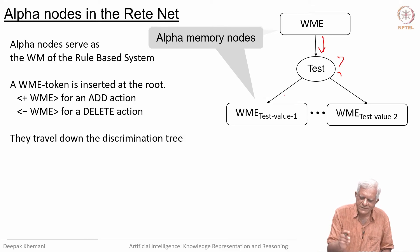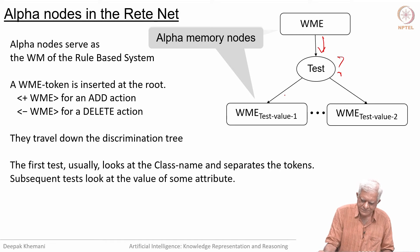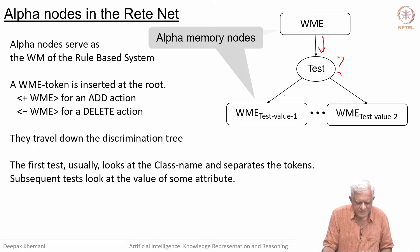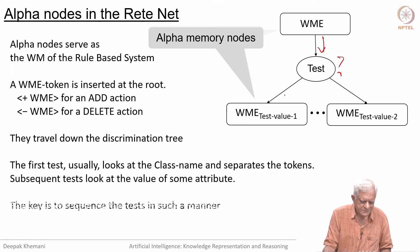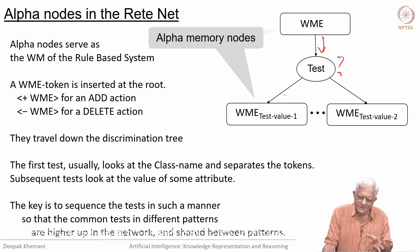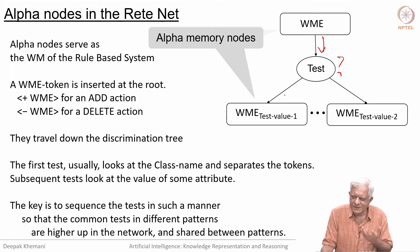When we draw these networks, we will use a more compact representation. The first test usually looks at the class name — what kind of data are you looking at? Is it student data? Is it ranking data? It separates the token, and subsequent tests will look at the value of some attribute. The key to building an efficient RETE network is to organize the test order so that more common attributes are tested first and less common attributes are tested further down.